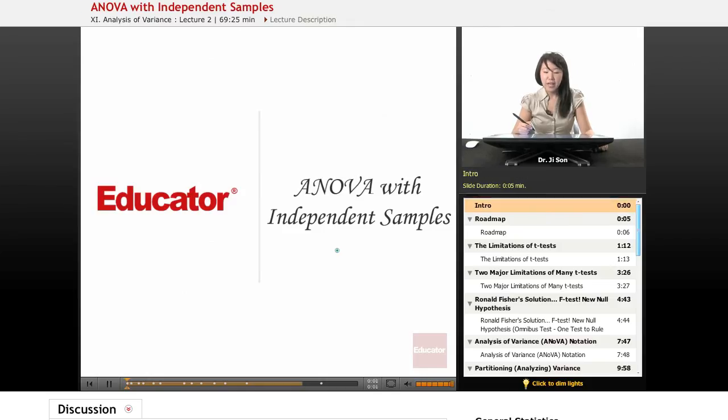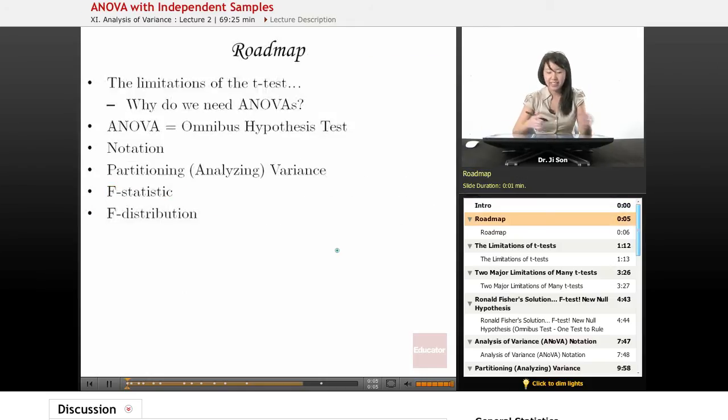Hi, welcome to educator.com. We're going to talk about ANOVA with independent samples today. First, we need to talk about why we need to introduce the ANOVA. We've been doing so well with t-tests so far, right? Well, there are some limitations of the t-test, and that's why we're going to need an ANOVA.